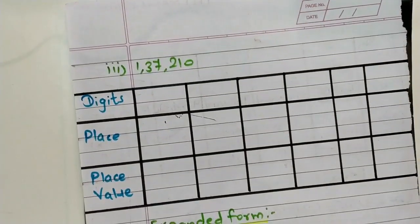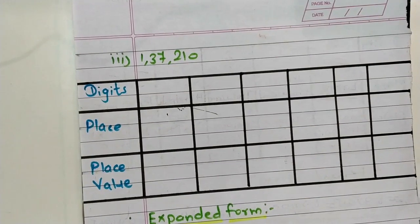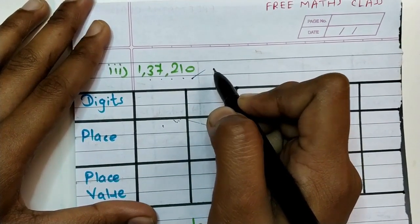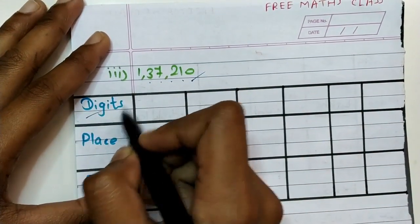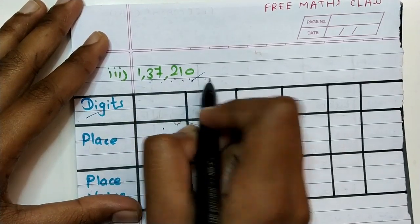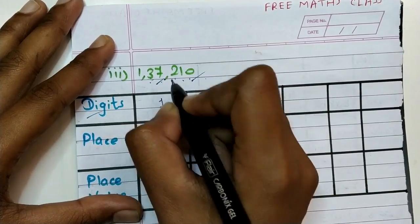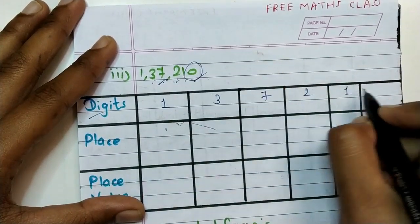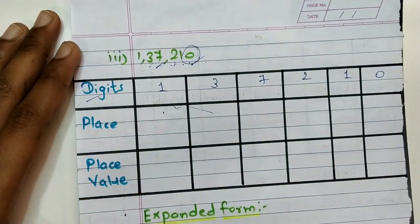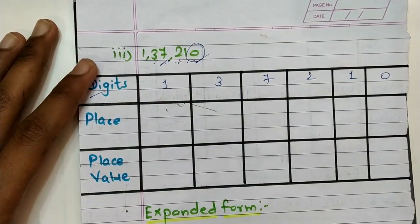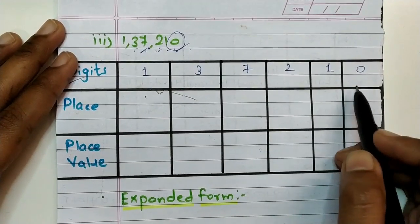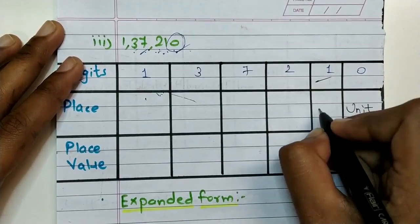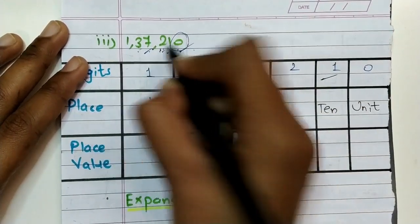Next example is 1,37,210. We need to write this number's expanded form. Firstly we write the digits: one, three, seven, two, one, and lastly zero. For places we go from right-hand side to left-hand side. Place of zero is unit place. Place of one is tens place. Place of two is hundreds place.